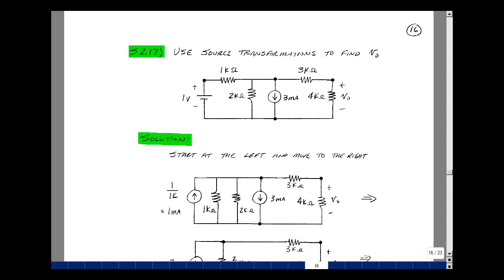This lesson deals with supplemental problem 217. You can find this problem in the ECE 201 eBook in the Chapter 2 Supplemental Problems on page 16. Given this circuit, can we solve for the voltage V0 by using source transformations?